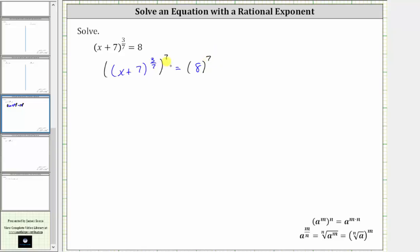Now simplifying on the left, we multiply the exponents. If it's helpful, we can write seven as a fraction with denominator of one. Notice we have a common factor of seven between the numerator and denominator that simplifies to one.